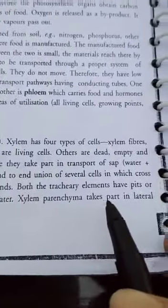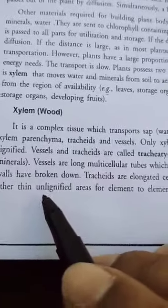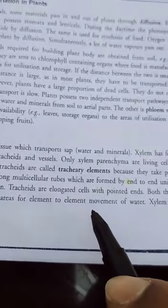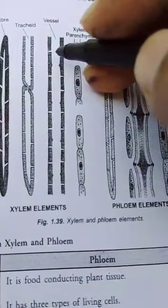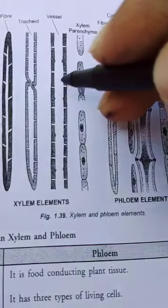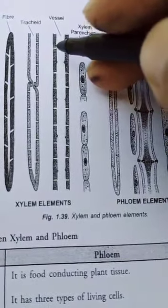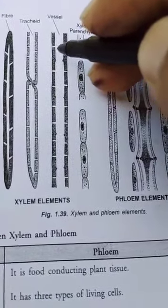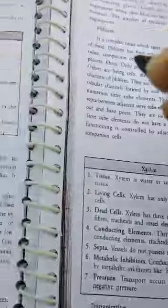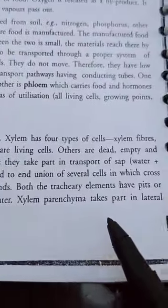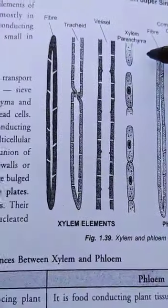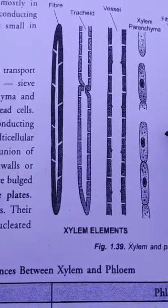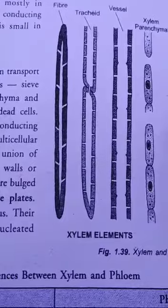Both the tracheary elements have pits or other thin unlignified areas for element-to-element movement of water. This means that vessels have unlignified areas which are the same parts and other parts which allow water movement. Xylem parenchyma takes part in lateral flow of water. This means that water can be transported laterally in the plant body.